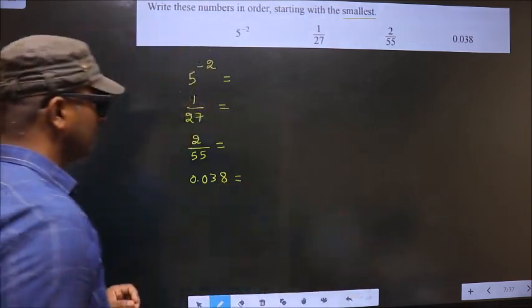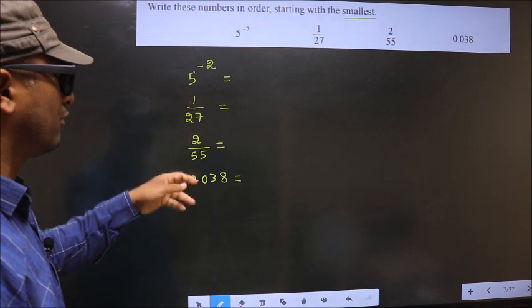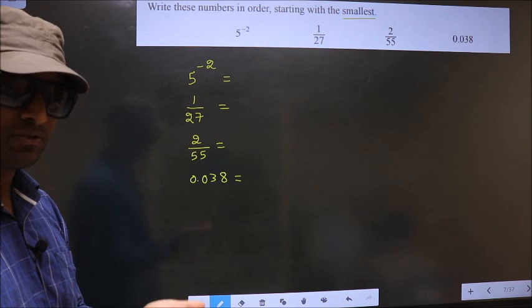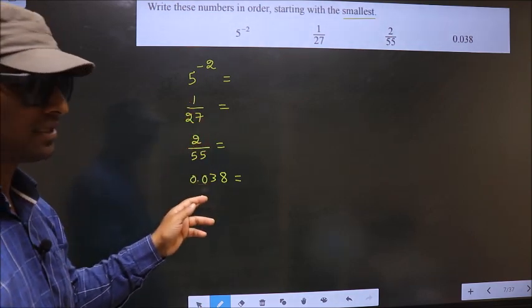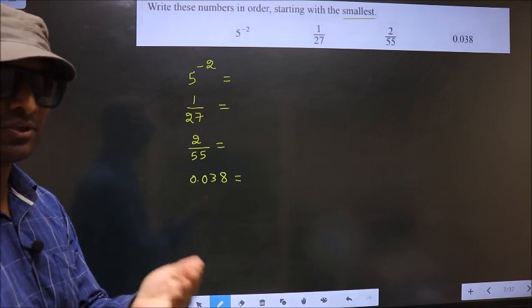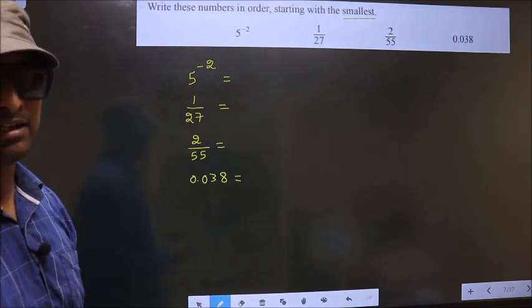Next, when the numbers are in this form, we cannot decide which is the smallest. So we should convert each number to 3 significant figures. To do that, we take the help of a calculator.